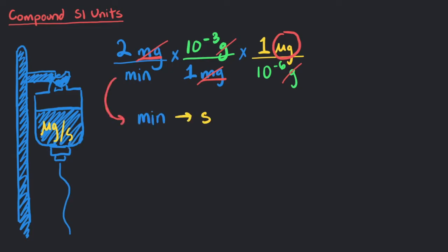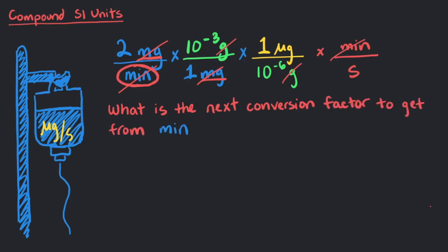We need to take care of the other conversion first. Okay, let's look at the minutes from the original given number. Because minutes are on the bottom, our next conversion factor should have minutes on top so we can cancel the units out. We need to have seconds on the bottom. What is the next conversion factor to get from minutes to seconds?